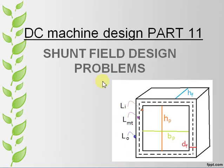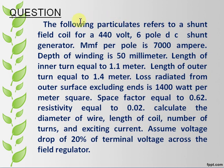DC machine design part 11: shunt field design problems. The following problem refers to a shunt field coil for a 440 volt, 6-pole DC shunt generator. MMF per pole is 7000 ampere. Depth of winding is 50 millimeter. Length of inner turn equals 1.1 meter. Length of outer turn equals 1.4 meter.